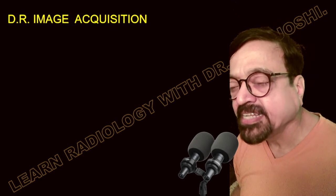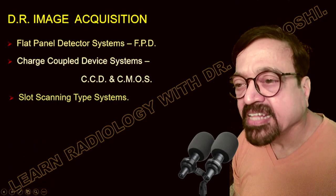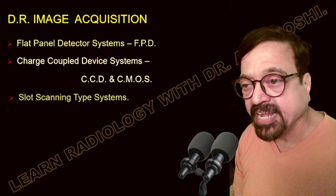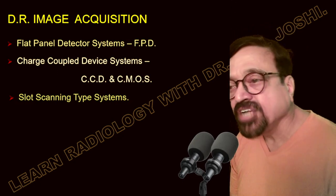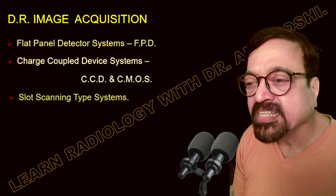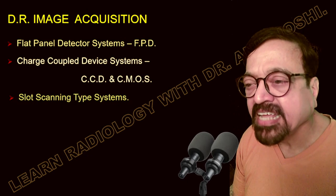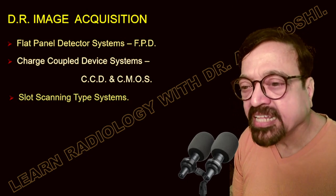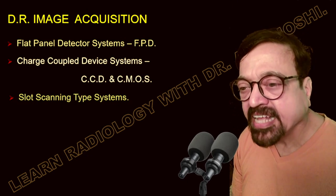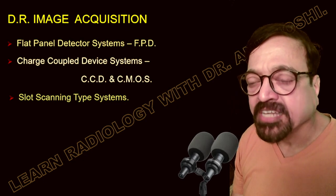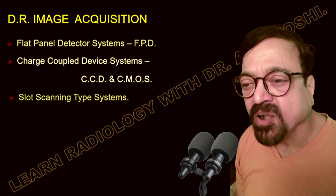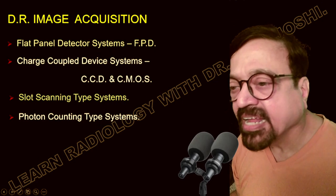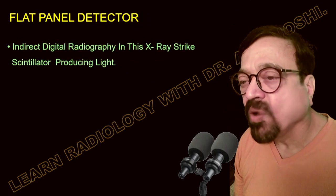DR image acquisition systems include flat panel detectors (FPD), charge-coupled devices (CCD), and CMOS sensors. There are also slot-scanning type systems and photon-counting type systems. These represent the main categories of detector technology used in modern DR radiography.